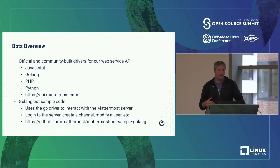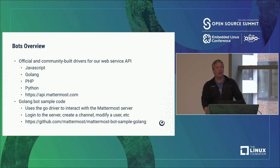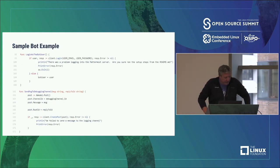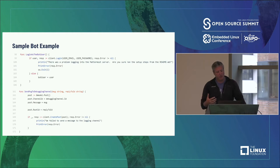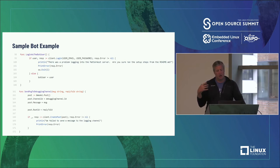We also provide a sample bot written in Go. It uses the Go driver to interact with the Mattermost server and shows you how to log in, create a channel, modify a user, and goes through a whole bunch of samples of how a bot might respond. Here's a very simple bot example — the first function logs in as a bot user, and starting at line 161 we send a message to a debug channel. Line 168 is as simple as it gets: client.createPost, a post with a channel ID and a message body. We create a lot of bots internally to respond to messages and auto-respond to things in the UI.